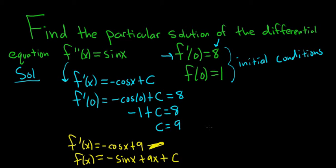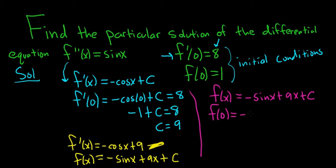The last thing to do is find our C. So I'm going to write down our f again. f(x) = -sin(x) + 9x + C. Now we'll use our second initial condition to find our other C. So f(0) = -sin(0) + 9(0) + C.